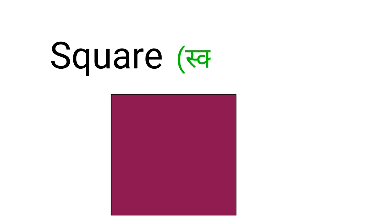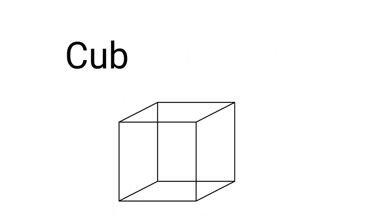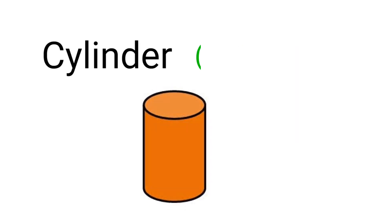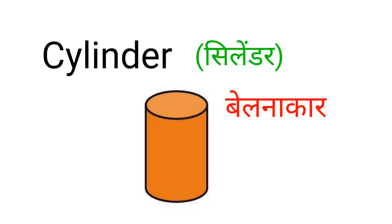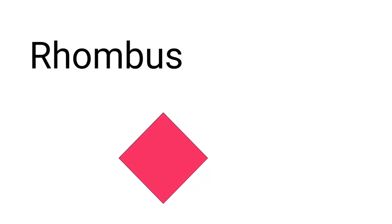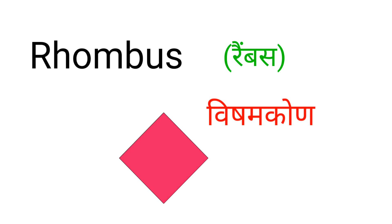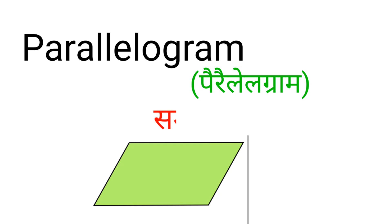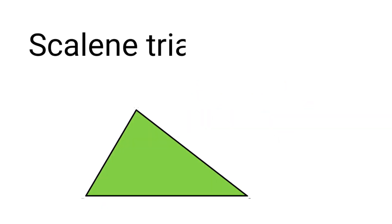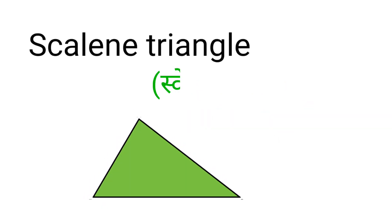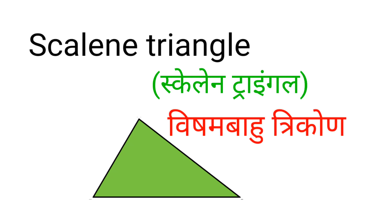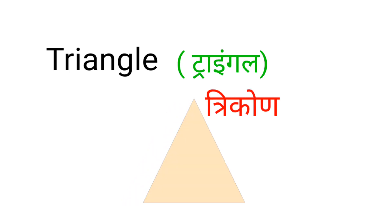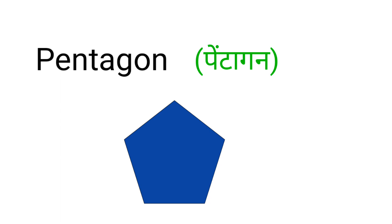Square — Square means Varg. Cube — Cube means Ghan. Cylinder — Cylinder means Belnakar. Rhombus — Rhombus means Bisham Kod. Parallelogram — Parallelogram means Samantar Chatur Bhuj. Scalene Triangle — Scalene Triangle means Bisham Bahu Tri. Triangle — Triangle means Tribhuj. Pentagon — Pentagon means Punch Kod.